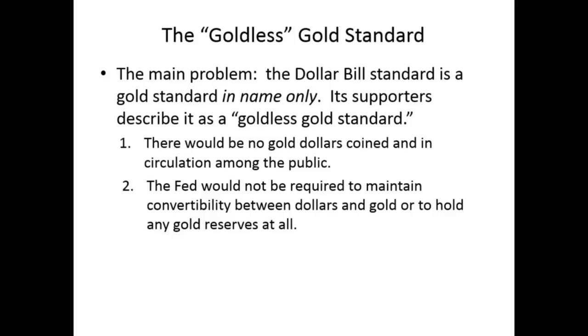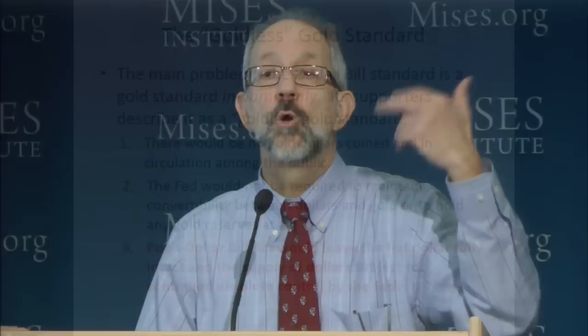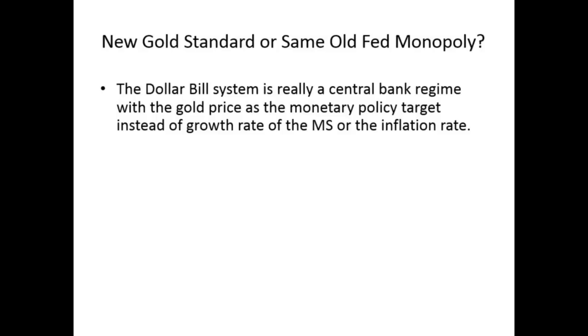The main problem is it's a gold standard in name only. In fact, the supporters call it the 'goldless gold standard' — they think it's a great thing. There will be no gold dollar coins in circulation. The Fed would not be required to maintain convertibility between dollars and gold or to hold any gold reserves at all. At least under Bretton Woods they were forced to hold gold reserves and convert them for foreign governments — that would be gone now. Poe's act would leave the fiat dollar fully intact and the supply of dollars would still be subject to the Fed. And of course, if you went into a recession or had a Middle East emergency, they would simply suspend it — just change the price of gold. It's the same old Fed monopoly.